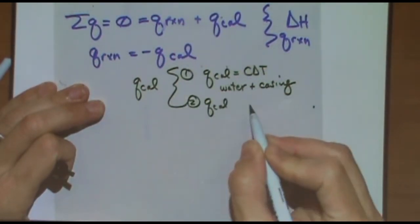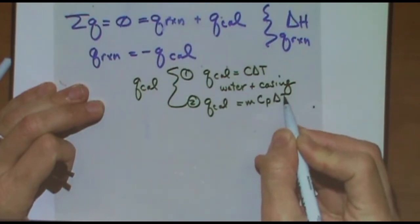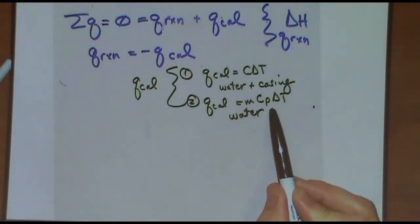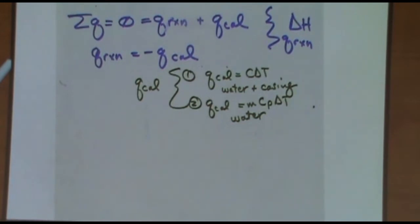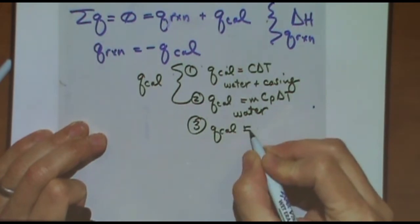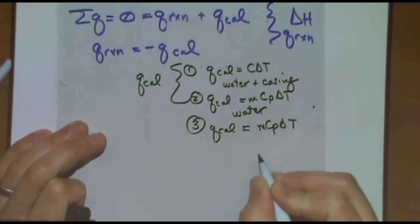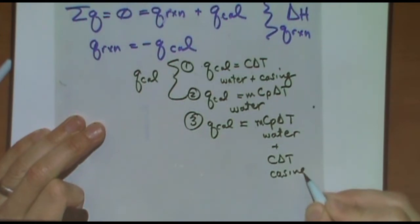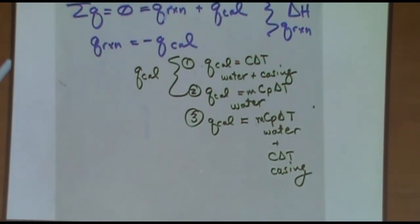Case two, Q cal is equal to MCP delta T. In this case, they only talk about the water. So the calorimeter is just the water in the calorimeter and we're ignoring the casing, the stirrer, all the other pieces of it. And so this MCP delta T is of the water in the calorimeter. This was true in the salmon example I did in class. And in case three, Q cal is equal to MCP delta T plus C delta T. Here's a case where they say the water and the casing of the calorimeter or they might just say the calorimeter are both important. That happened in the homework example. So one of our OWL homeworks was this.